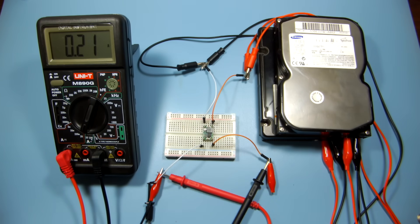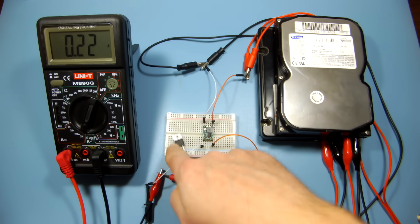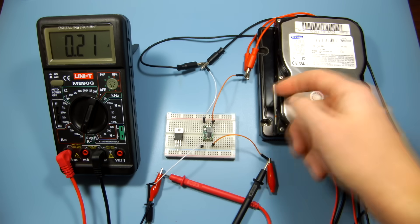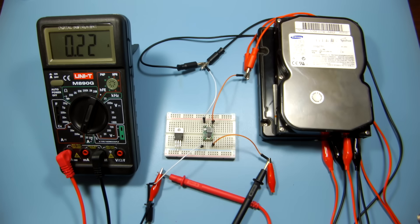In this configuration, the linear voltage regulator consumes over 90% more power than the buck converter, which is worth considering especially when your device is battery powered.